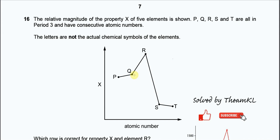Question 16. The relative magnitudes of property X of five elements is shown. P, Q, R, S, and T are all in Period 3 and have consecutive atomic numbers.